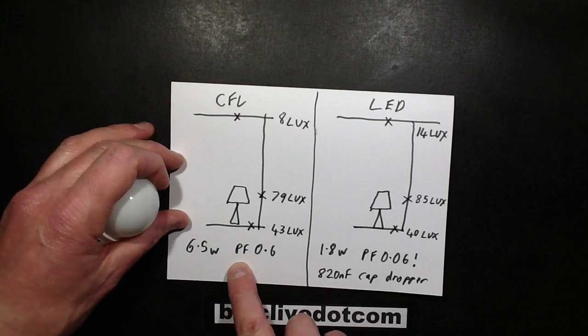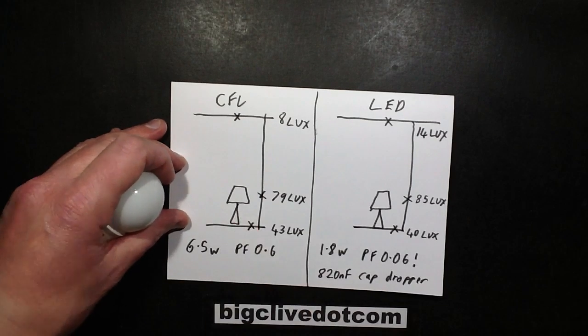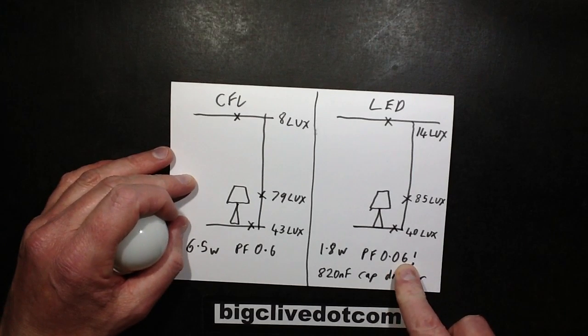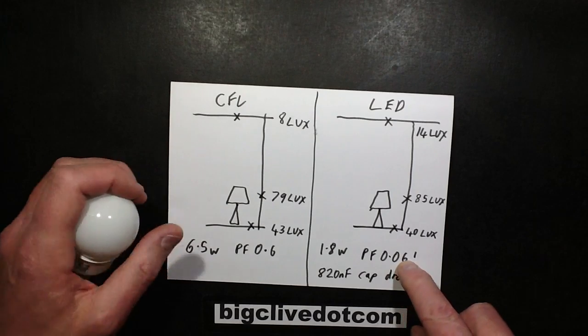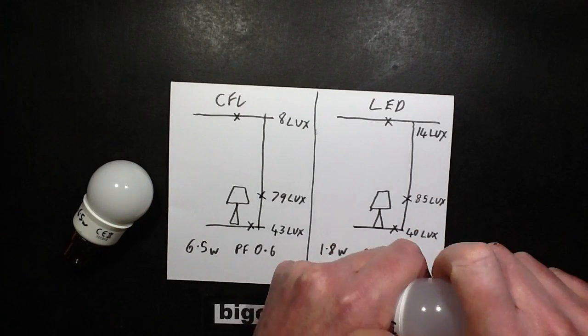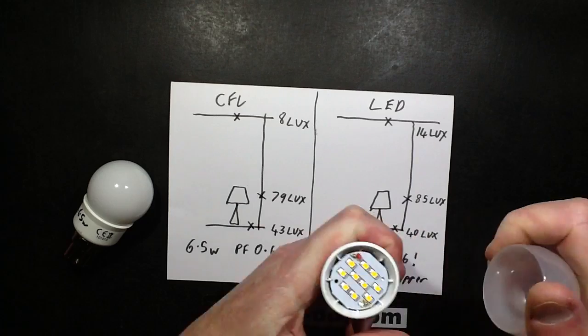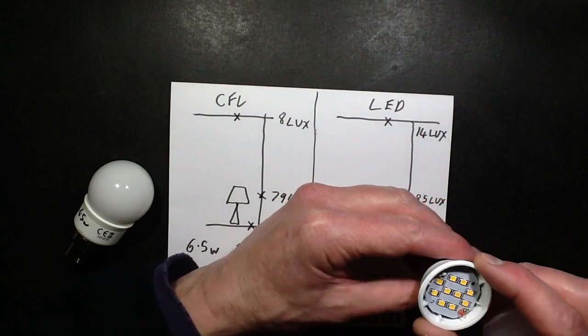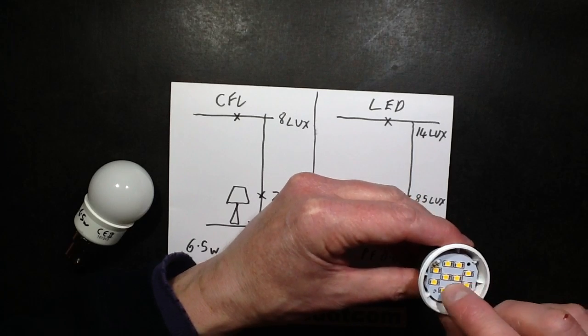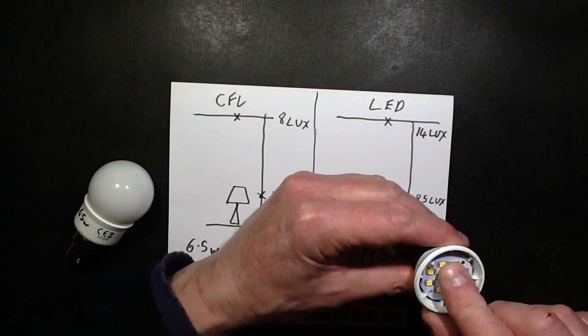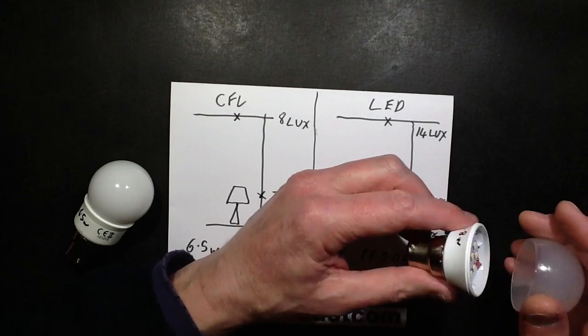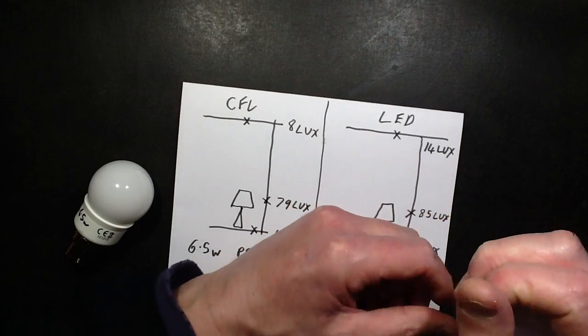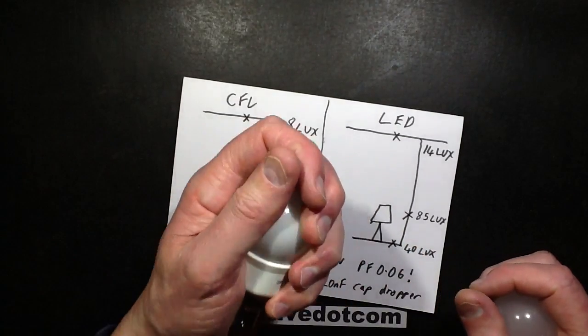Power factors incidentally: 0.6 for the compact fluorescent lamp, no great surprise there. Really oddly 0.06 for the LED lamp which is very strange. The LED lamp has an 820 nanofarad capacitive dropper in it, and then it's got 10 of these little surface mount LEDs on an aluminum plate inside. It runs cold, there's no real significant heat off it at all versus this one which gets very hot.